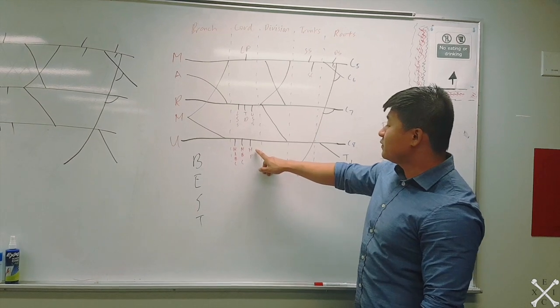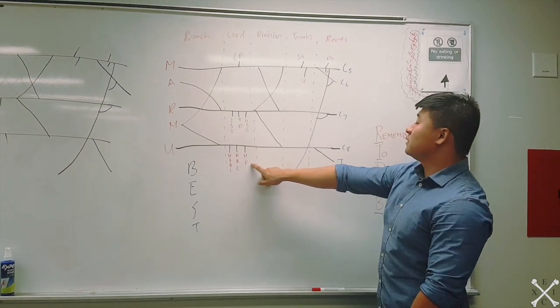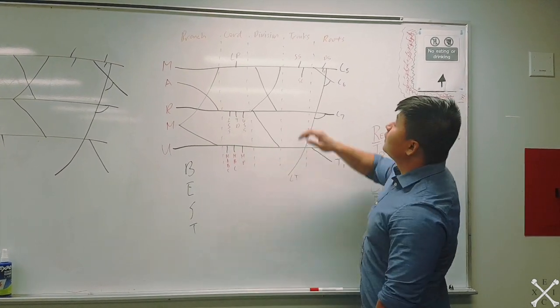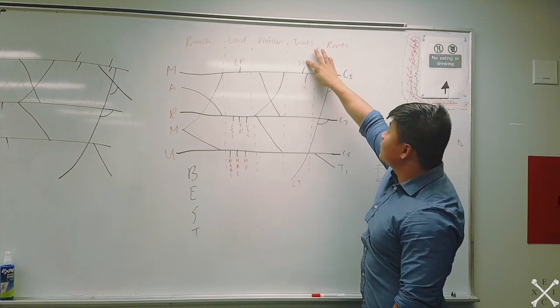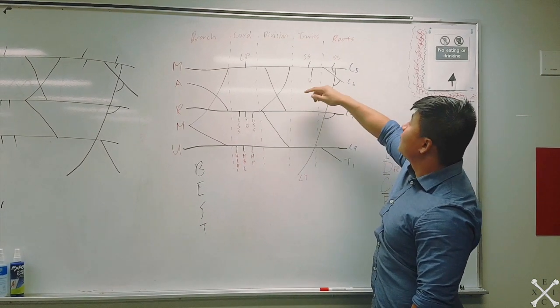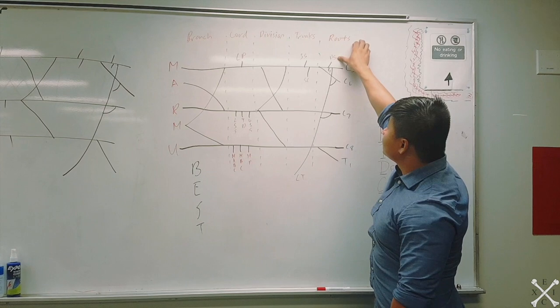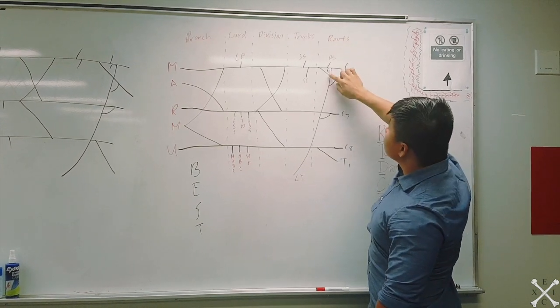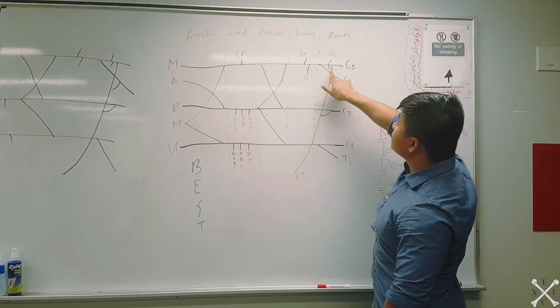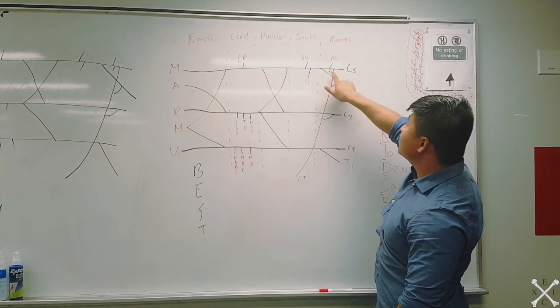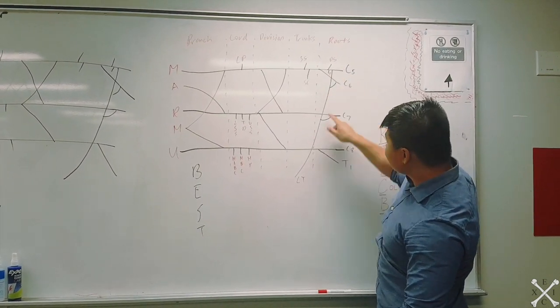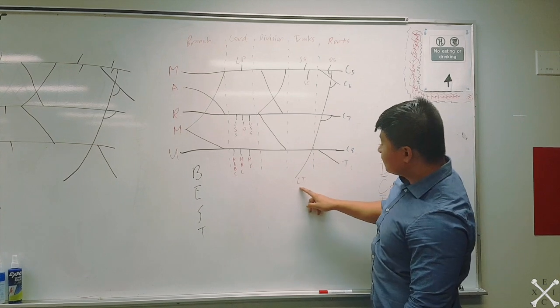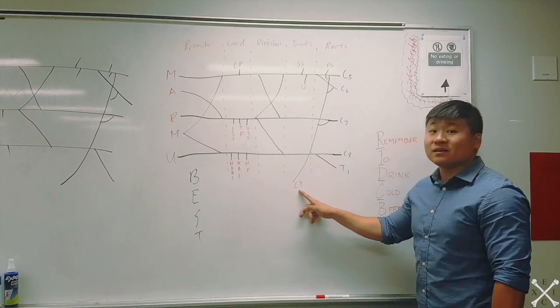This one is your suprascapular, this one is your subclavian nerve, this one is your dorsal scapular. This little branch is your phrenic that innervates your diaphragm. Finally, you have the long thoracic that innervates your serratus anterior.